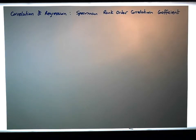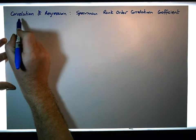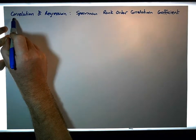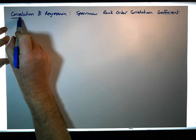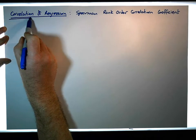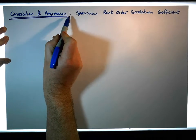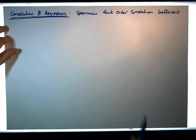Hi guys, this is Jonathan Lambert with Mathematics Development and Support at the National College of Ireland. This video, another in our series dealing with correlation and regression, is going to concentrate on what is known as the Spearman Rank Order Correlation Coefficient.